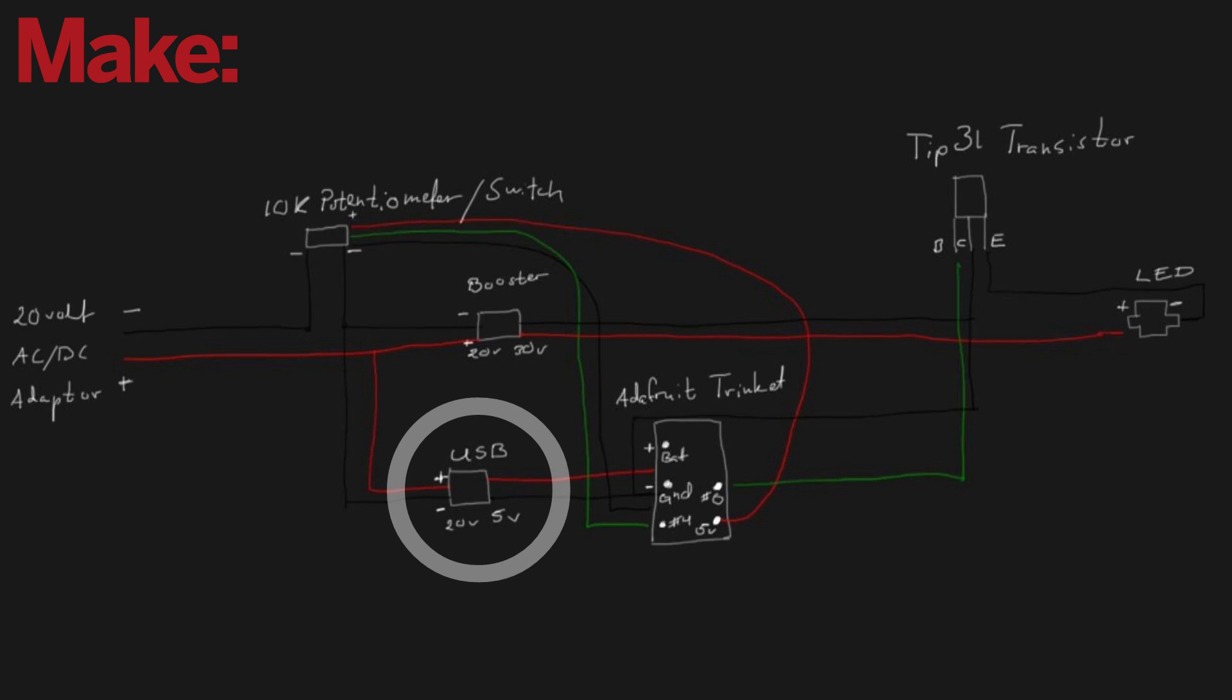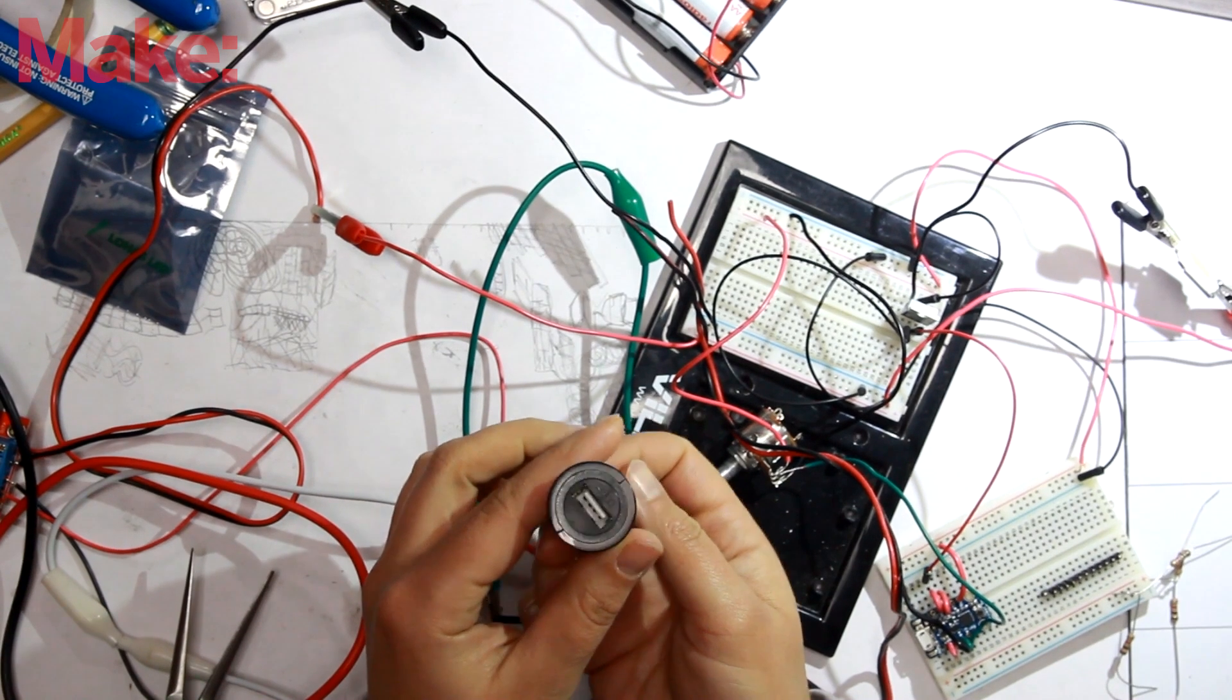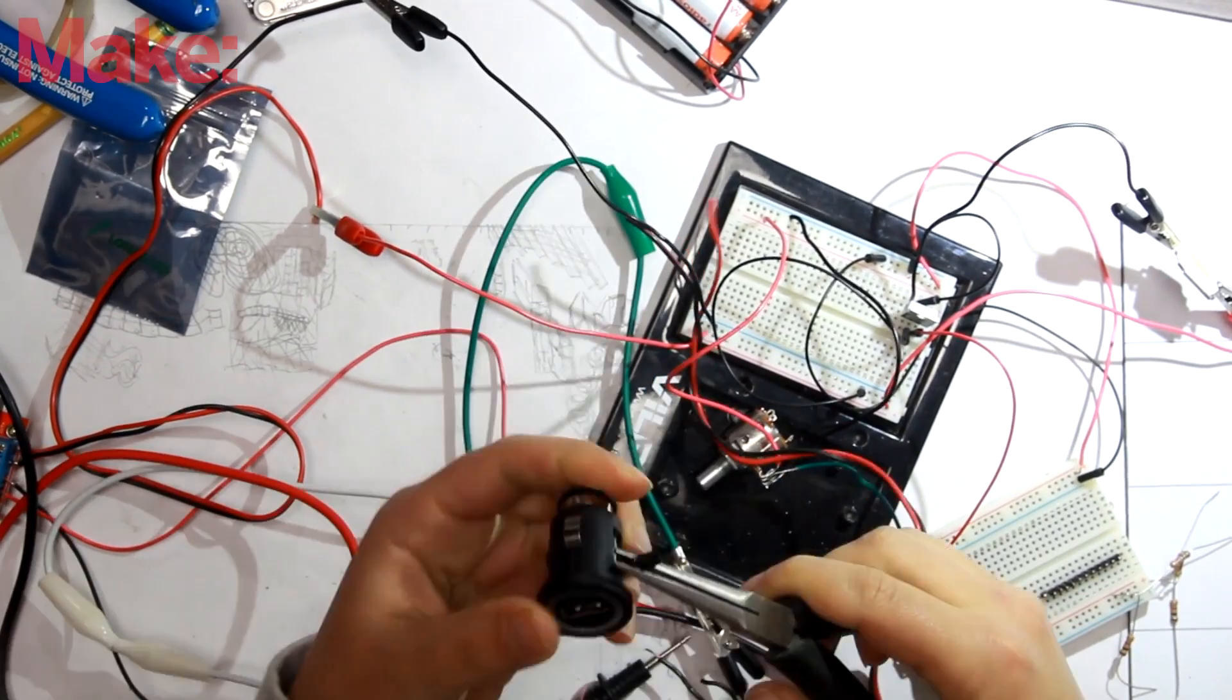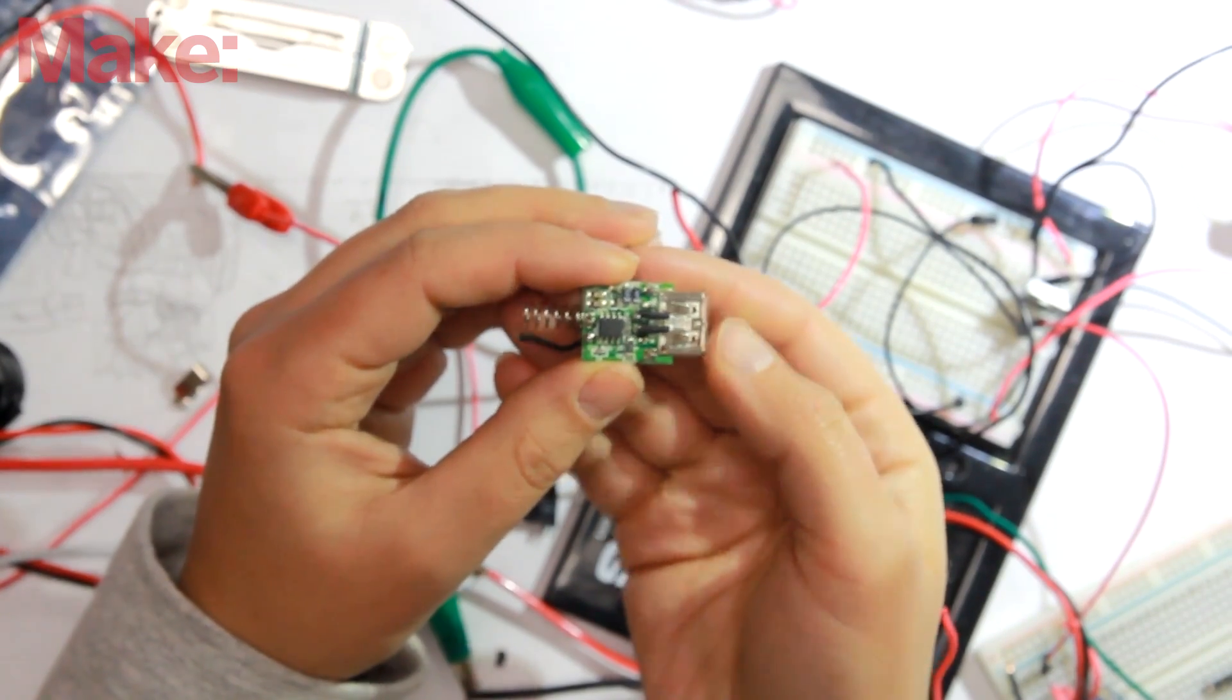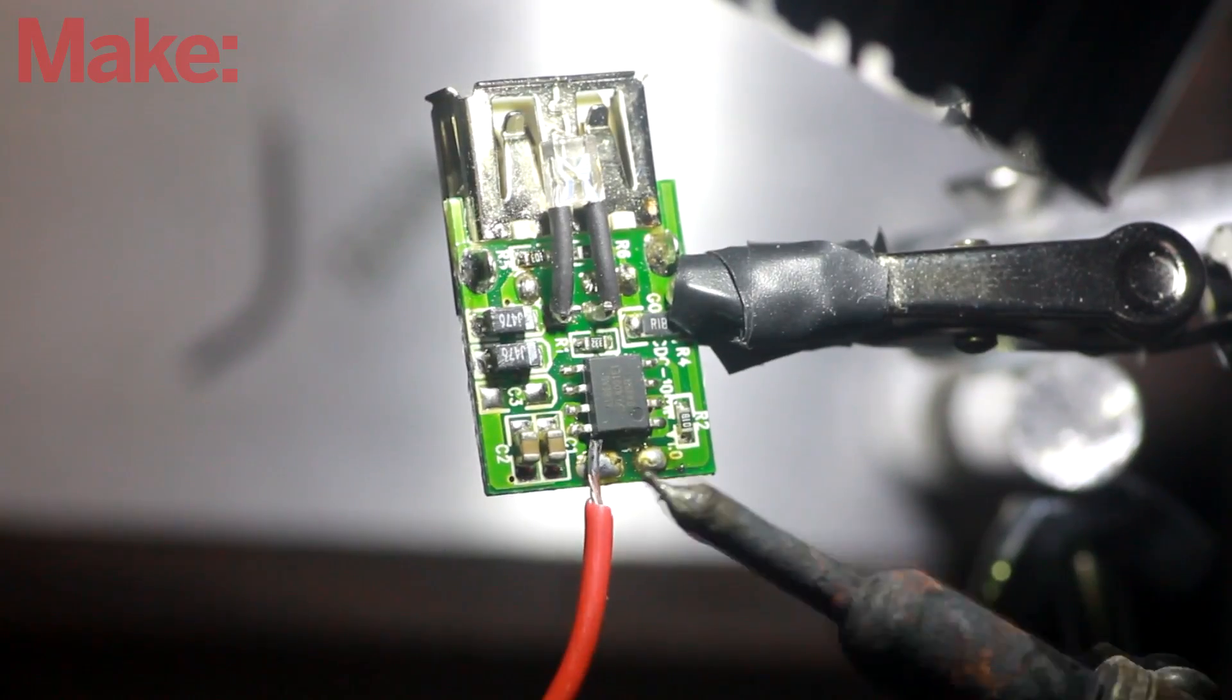To step down the voltage to 5 volts to power the trinket, I actually took apart this USB outlet for automobiles. It has a DC to DC step down board inside which came in handy here. So I soldered the leads to that.